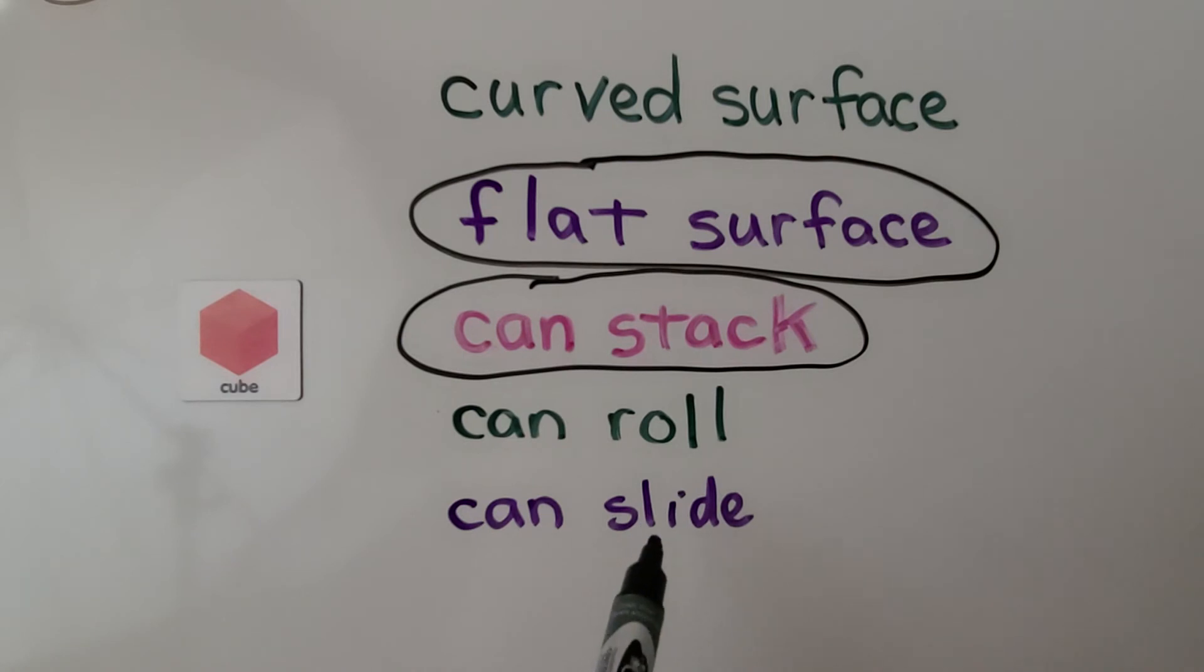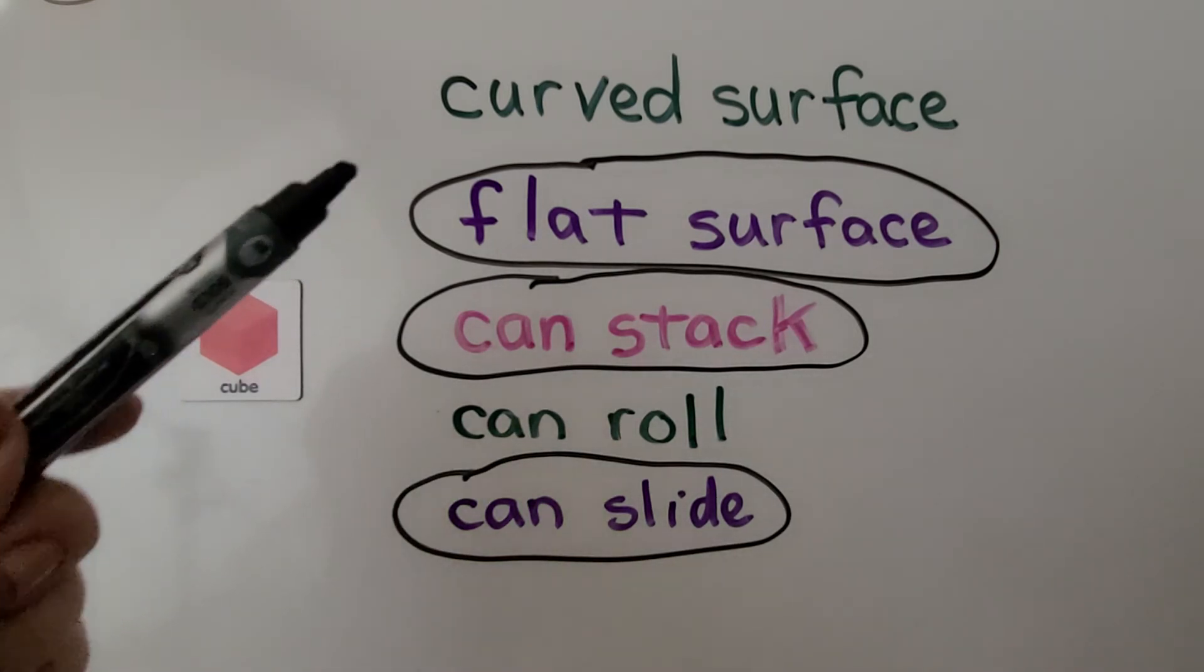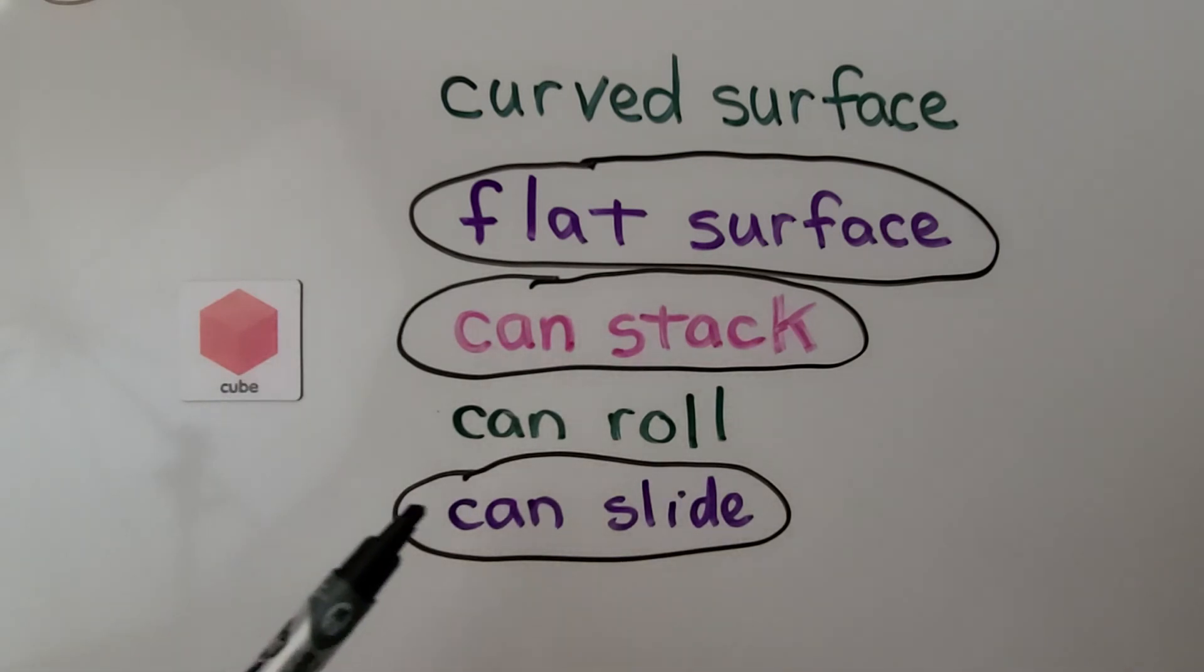Can slide. Does that describe a cube? If you said yes, you're right. Because a cube can slide on one of its flat surfaces. So we can circle can slide. So we can describe a cube as having flat surfaces. They can stack. And they can slide.